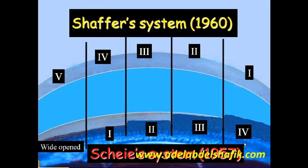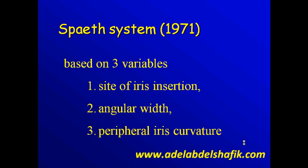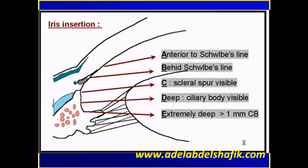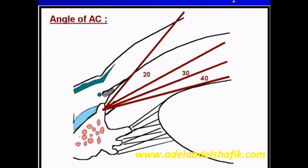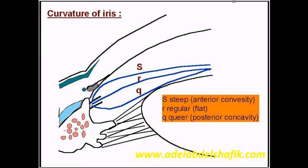Speth developed another system of classification depending on the location of insertion of the iris. A means anterior to Schwalbe's line, B is behind Schwalbe's line, C means the scleral spur is visible, D means deep so the ciliary body is visible, and E means extremely deep with more than 1 millimeter of the ciliary body visible. The angle degree can be 10, 20, 30, or 40.